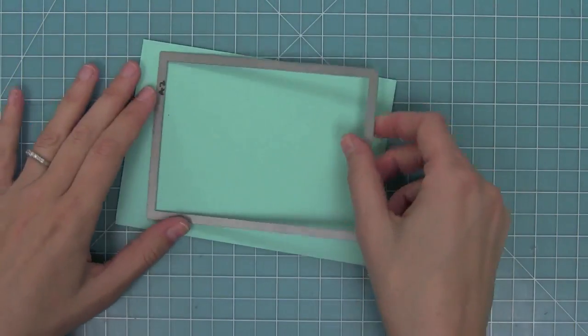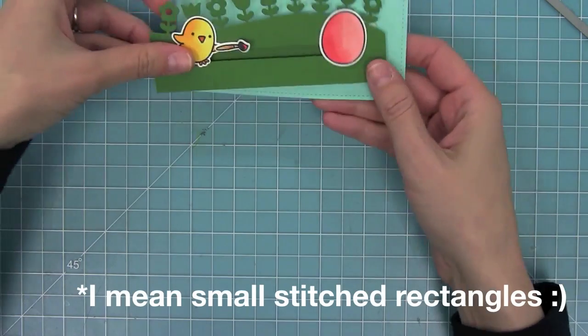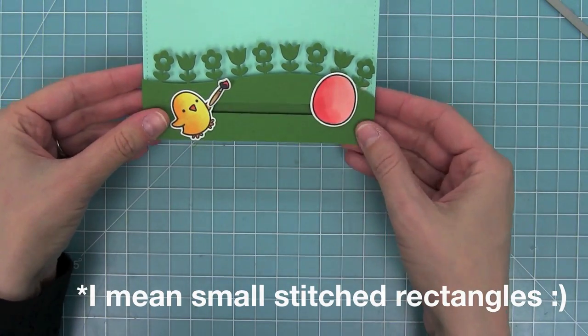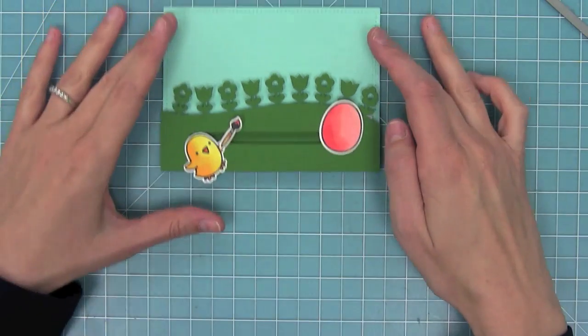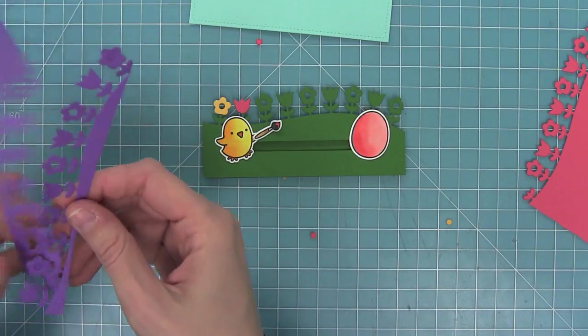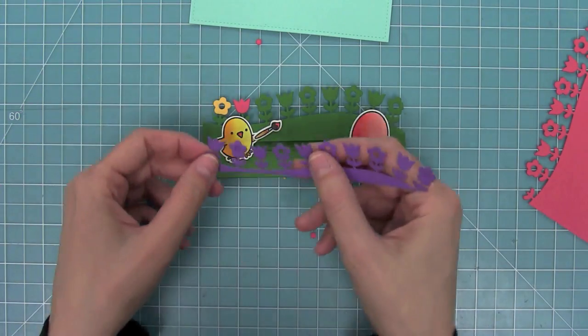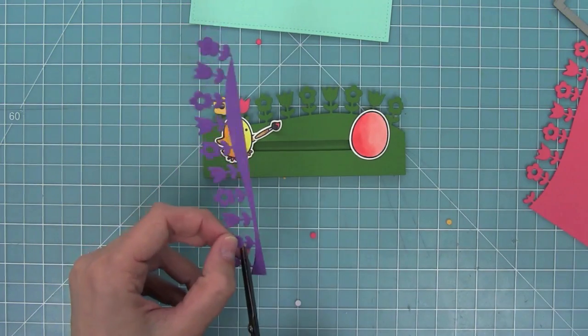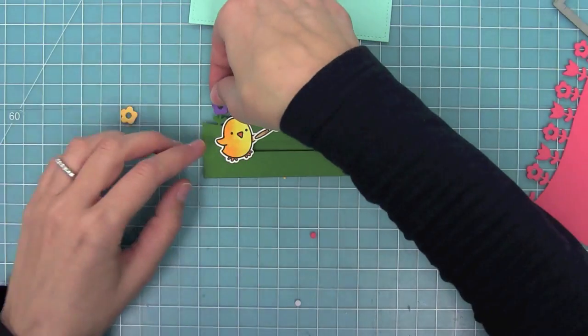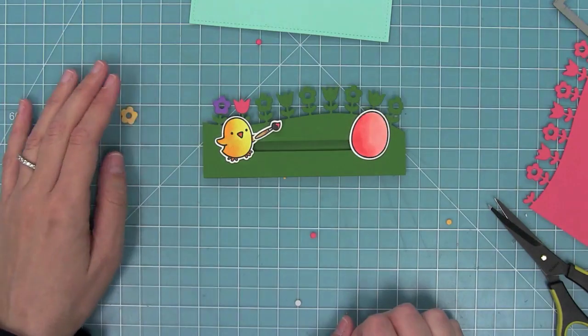Now here I have some Mermaid cardstock that I'm going to cut with the largest of Lawn Fawn's large stitch rectangle dies. Now I'm going to have a nice stitched edge for my sky, and then I'm going to start working on these flowers. I'm taking some Sugar Plum cardstock, Guava cardstock, and Sunflower cardstock, and I'm cutting it with that same flower border die. Then I'm just going to trim off the tops of these flowers.